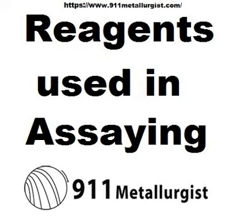Sulphuretted hydrogen, or hydrosulfuric acid, SH2, is a gas largely used in assaying, since by its action it allows of the metals being conveniently classed into groups. It is soluble in water, this liquid dissolving at the ordinary temperature about three times its volume of the gas. The solution is only useful for testing; in separations, a current of the gas must always be used. It is best prepared in an apparatus like that shown in figure 32, by acting on ferrous sulfide with dilute hydrochloric acid. When iron has to be subsequently determined in the assay solution, the gas should be washed by bubbling it through water in the smaller bottle, but for most purposes washing can be dispensed with.